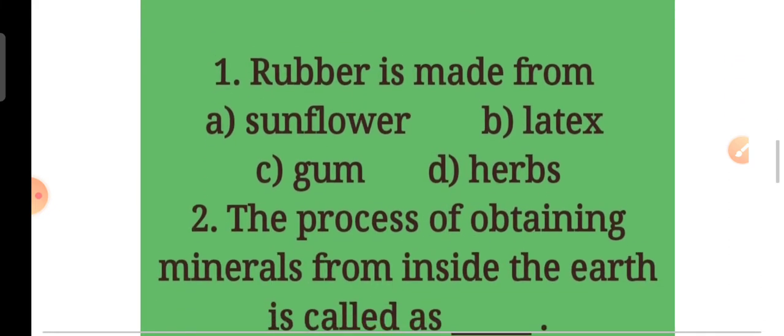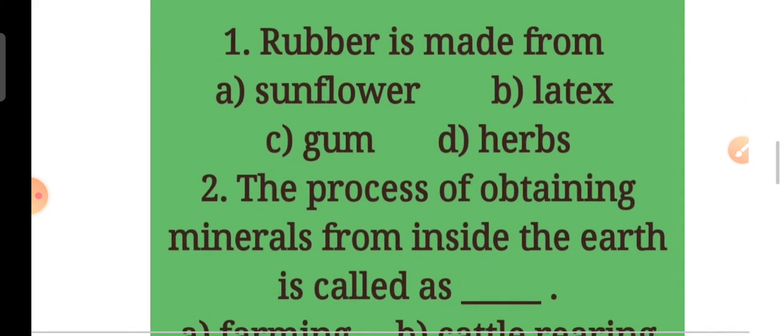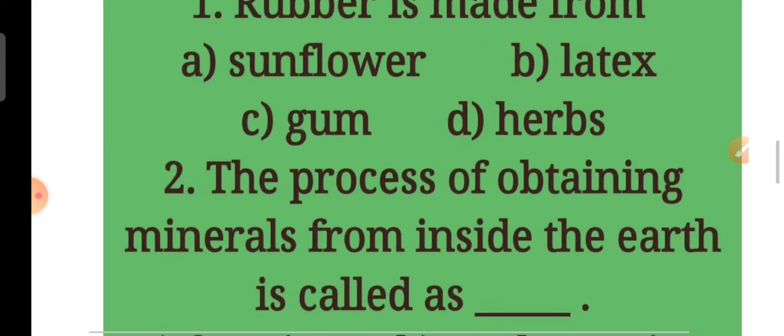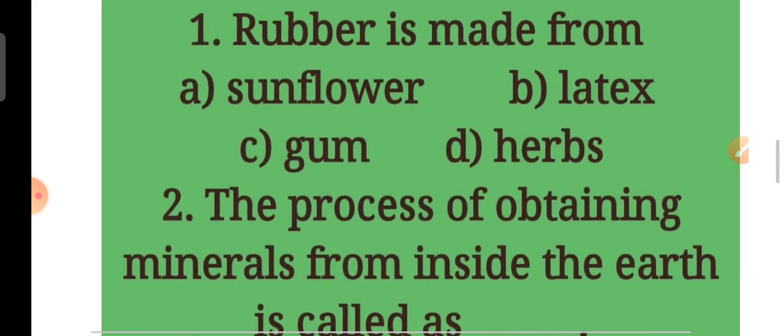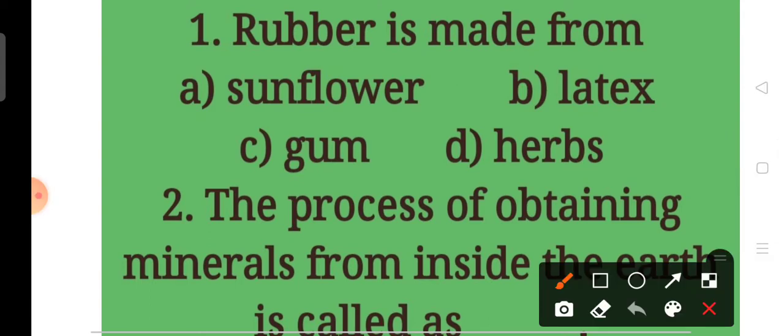Let's start the class with question number 1. Rubber is made from A. Sunflower, B. Latex, C. Gum, D. Herbs. Children, answer will be B. Latex. Rubber is made from latex.